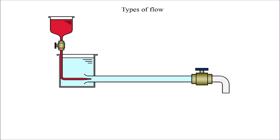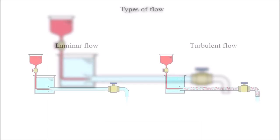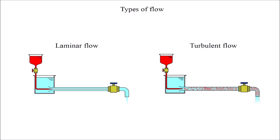The type of flow is an important factor when considering energy loss within a hydraulic circuit. There are two different types of flow: laminar flow and turbulent flow.